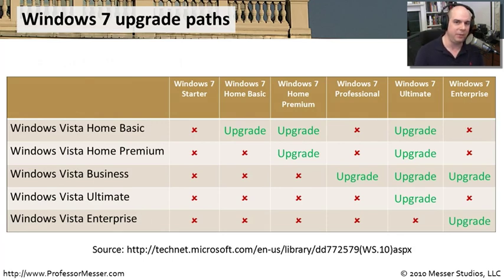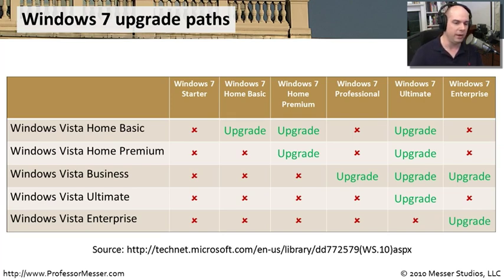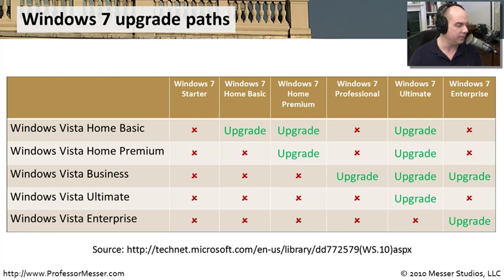I've created an Upgrade Path Chart to show where you can go and how to get there. Along the left side are the different Windows Vista versions; along the top are the Windows 7 versions. Generally, you can go from a Vista version to a comparable or higher Windows 7 version. The exception is that Windows Vista Home Basic or Home Premium cannot upgrade directly to Windows 7 Professional - you must first upgrade to Home Premium, then do an in-place upgrade to Professional. However, you can go from Vista Home Basic or Home Premium straight to Windows 7 Ultimate. Windows Vista Business can upgrade to Windows 7 Professional.